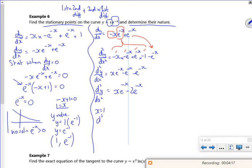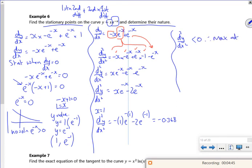So when x is 1, d2y by dx squared is minus 1 e to the minus 1 minus 2 e to the minus 1.